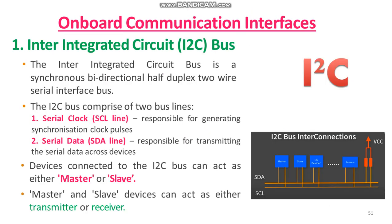The first onboard communication interface example is the inter-integrated circuit, that is the I2C bus. The name I2C comes from the fact that 'I' is pronounced two times, and hence it is called I2C. I2C is a serial protocol for a two-wire interface to connect low-speed devices like microcontrollers, A-to-D and D-to-A converters, input-output interfaces, and other similar peripherals in embedded systems.